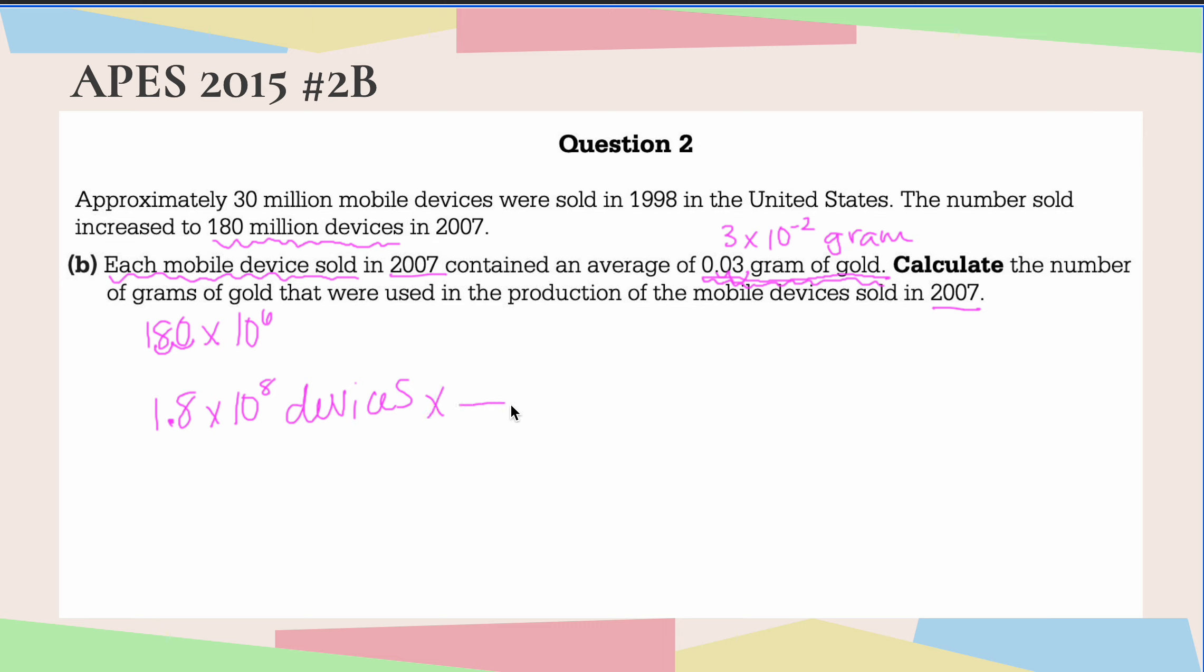Now, in order to set up my dimensional analysis properly, I have to make sure my units are going to cancel out. So for each device, in one device, I know that we have 3 times 10 to the negative 2 grams of gold. So now I always have to double check my units. Units are super important here. So I can cancel out devices here.